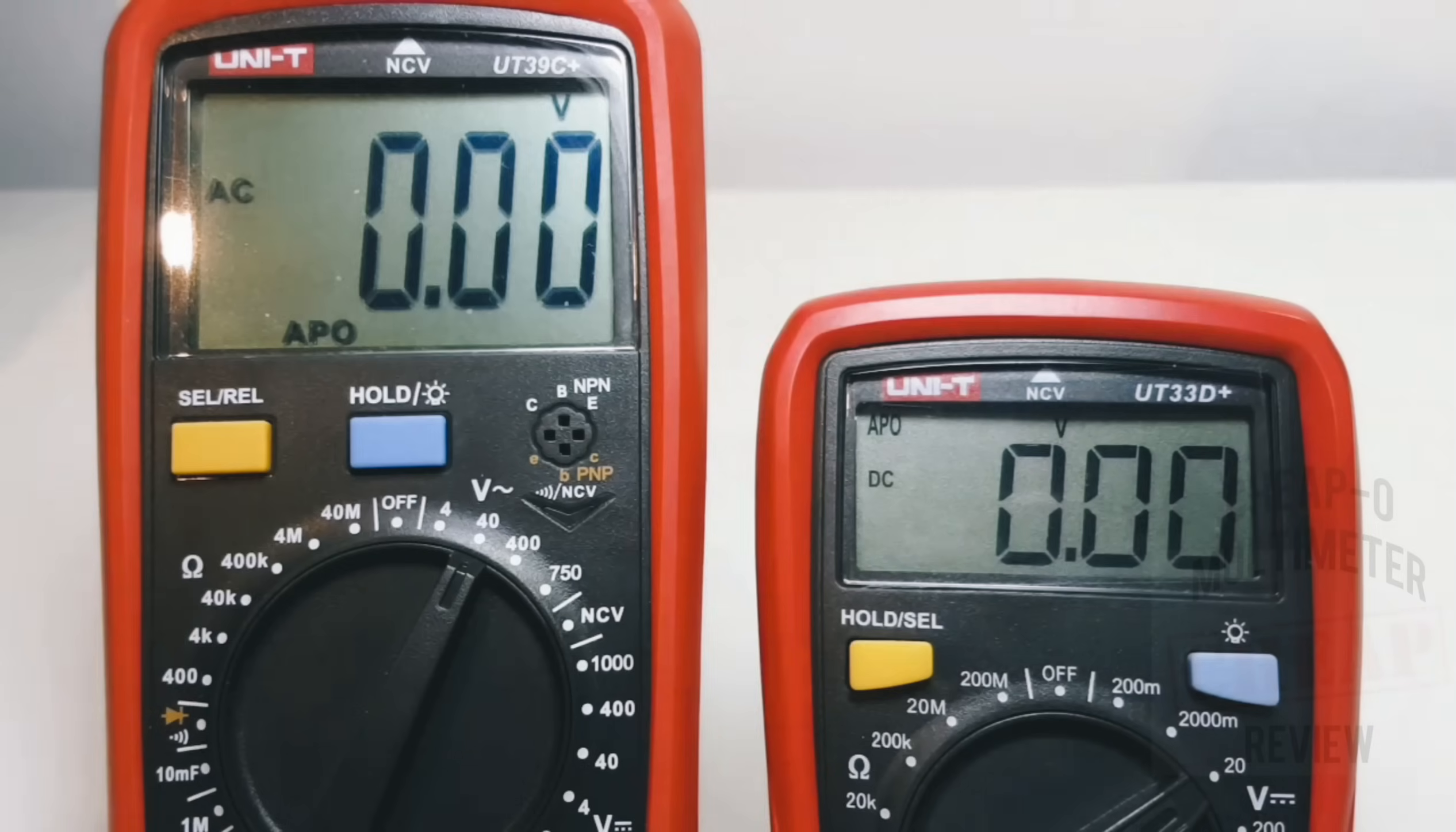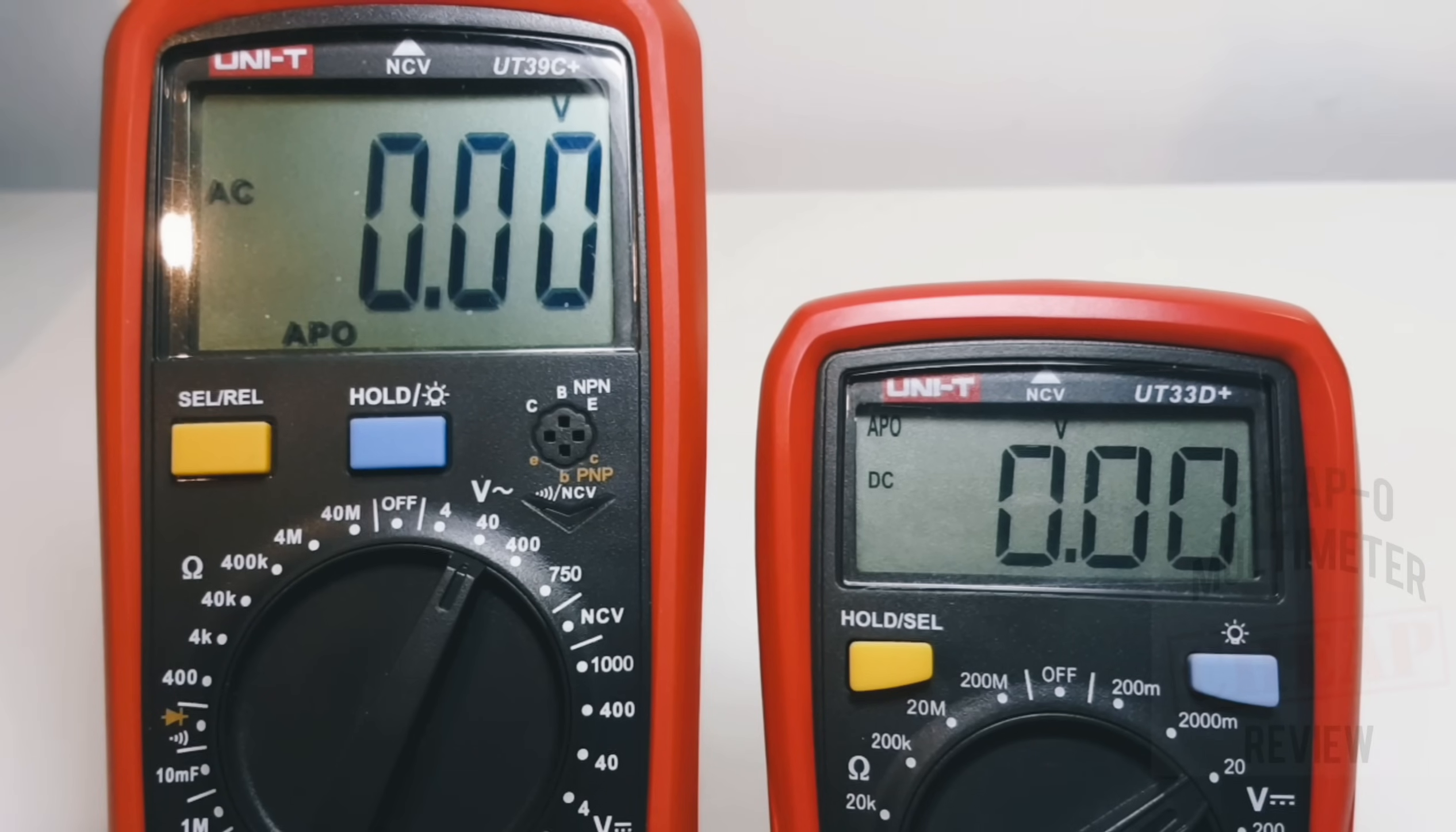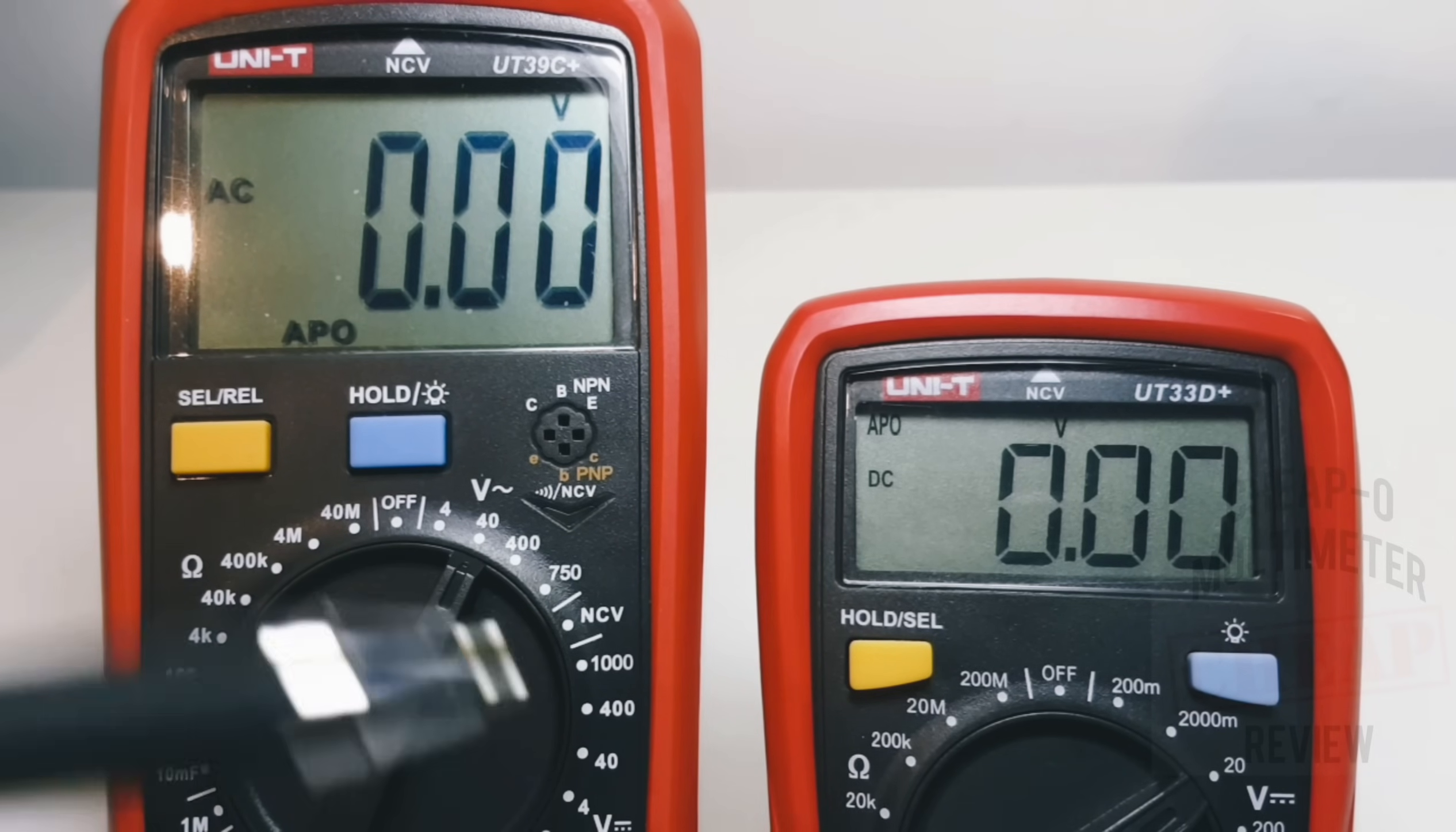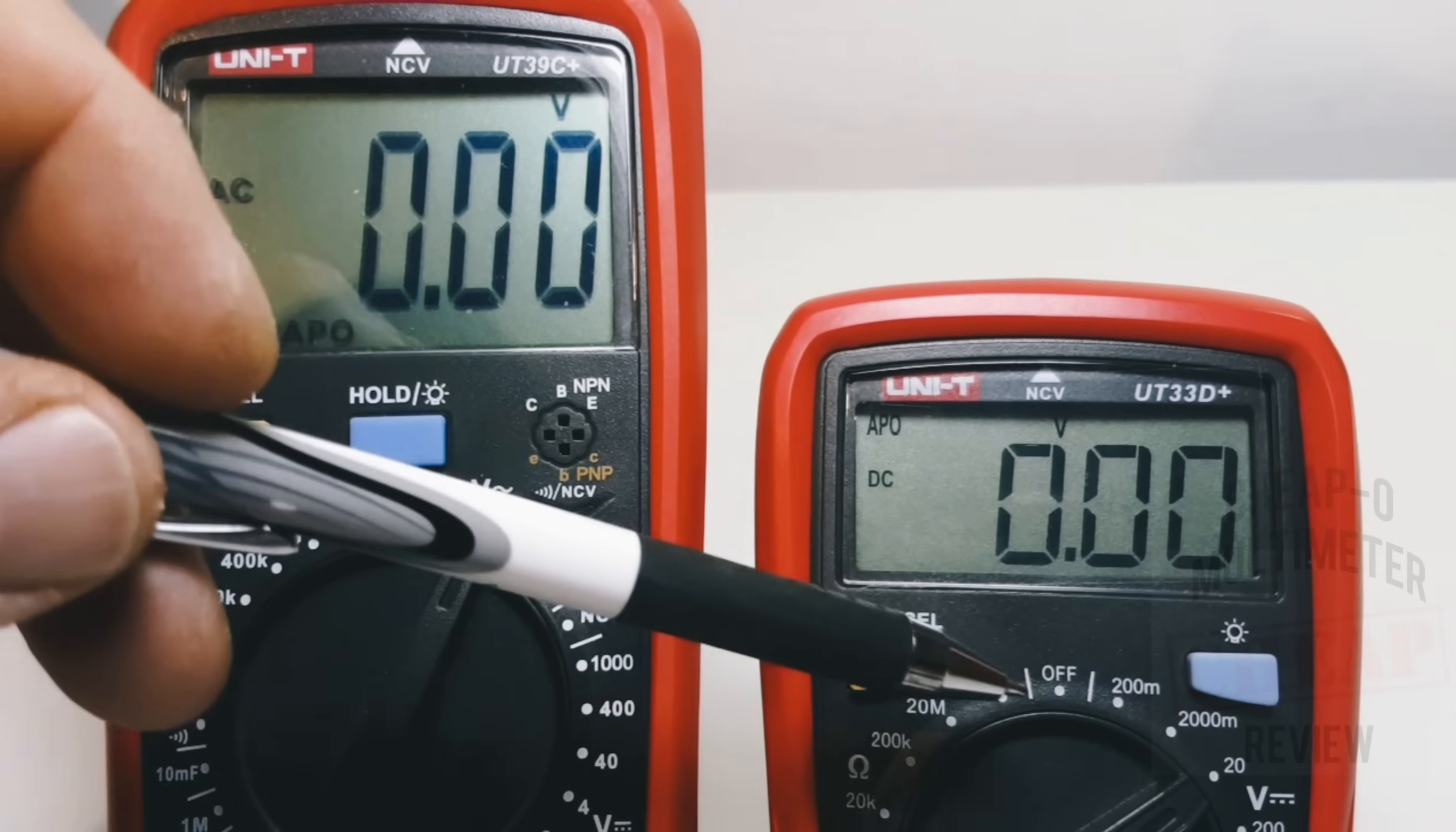And you actually have a better range for resistance: we have 200 megaohm as compared to the 40 megaohm on the 39C+. Now we don't have temperature on the 33D+, however, but we do have the AC/DC 600 volts and we have the non-contact voltage detection. So in a nutshell, you know, I gotta say I do like the form factor, the smaller size, and the overall look, fit and finish of the 33D+.